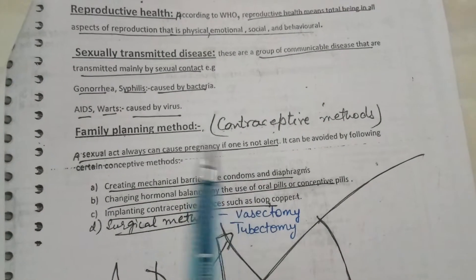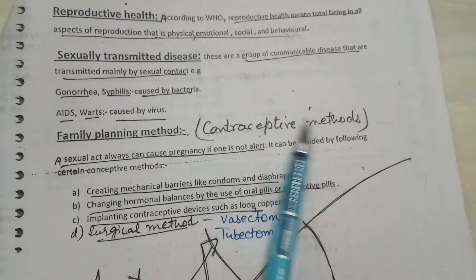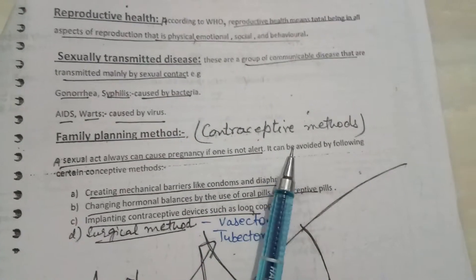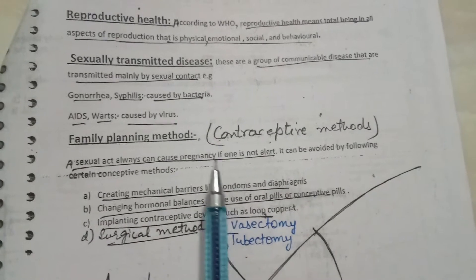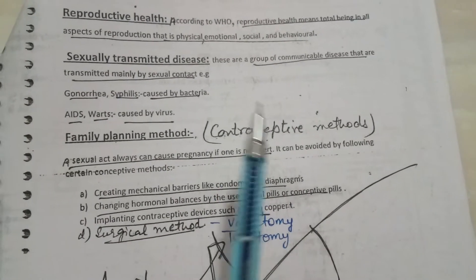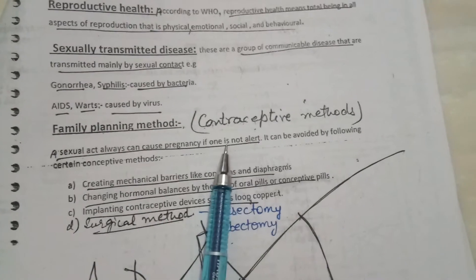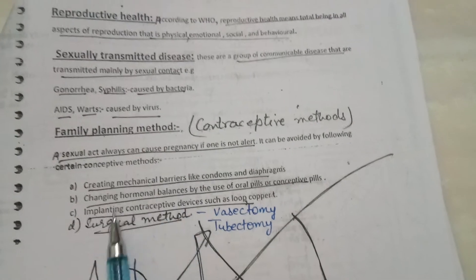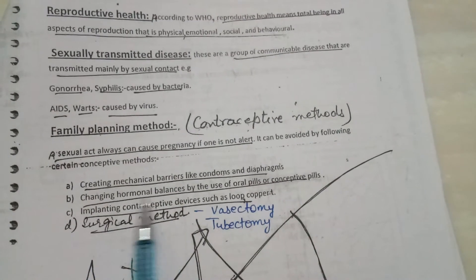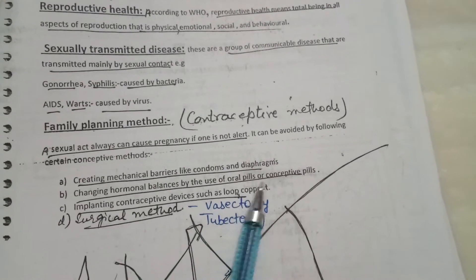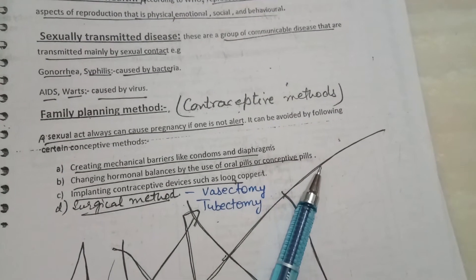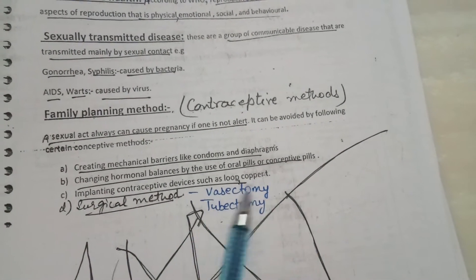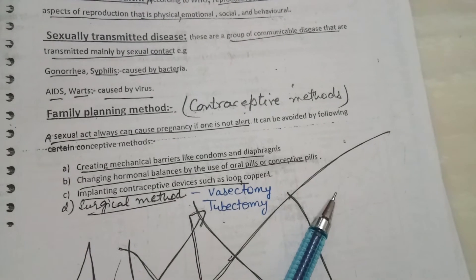Here is the family planning method, also called the contraceptive method — this means to avoid pregnancy, which helps in population control. First is the mechanical barrier method, like condom and diaphragm. Second, hormonal methods change the hormonal balance — females use oral or contraceptive pills. Third, implanting a contraceptive device like a loop or Copper-T inside the female body helps kill sperm.